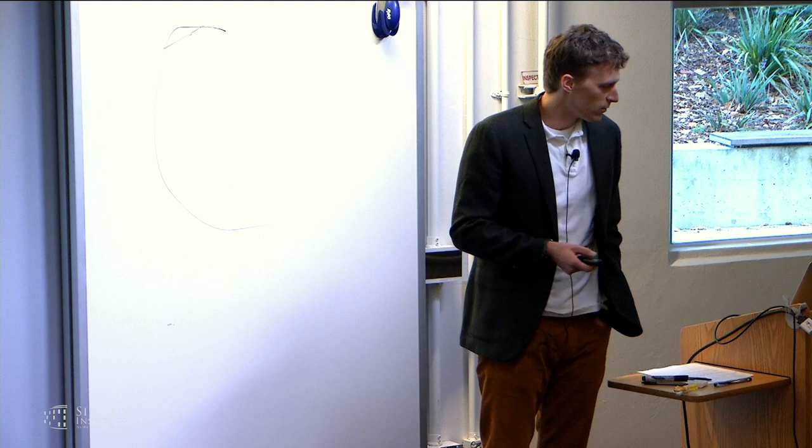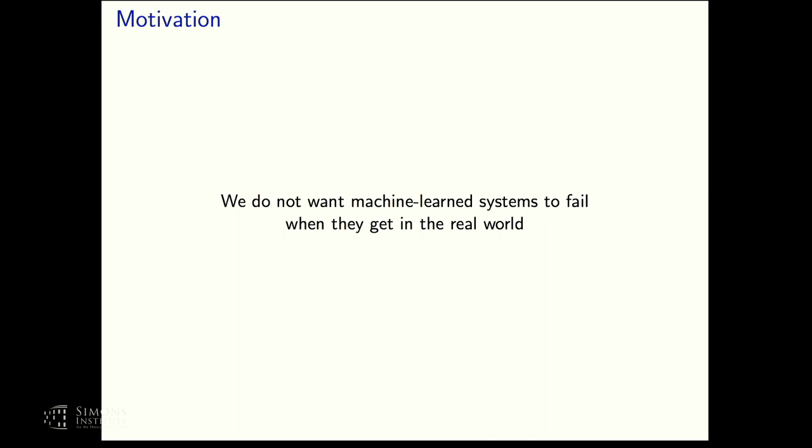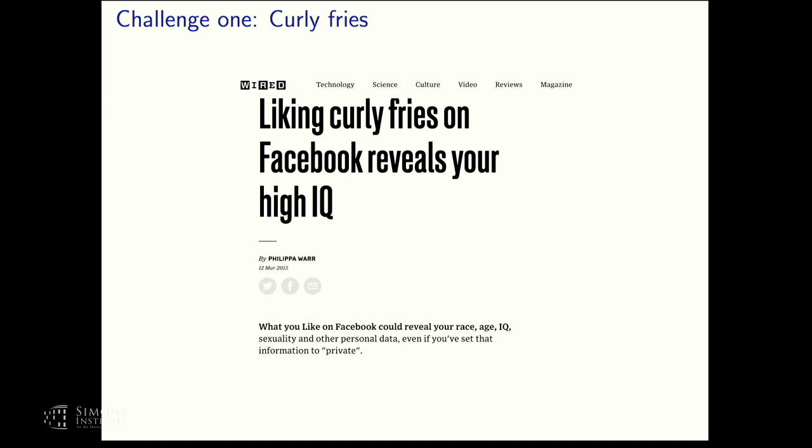So the motivation for my talk is that we do not want machine learned or statistically modeled systems to fail as soon as they get in the real world. Let me make this a little bit more salient. This is the first challenge in the talk. That challenge is that liking curly fries on Facebook reveals your high IQ. There are so many problems with this. First is that there were researchers who did this and actually published it as though this could possibly be true. Second is that Wired picked it up. And the third is that clearly, is this going to be true tomorrow? Is this going to be true with any different distribution of people than the people they picked? And even more importantly, who doesn't like curly fries? It's completely unclear to me how this could possibly be discriminative. You change the distribution a little bit. But there's no way this remains true tomorrow.